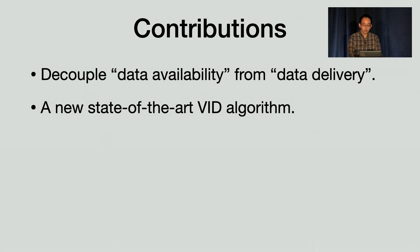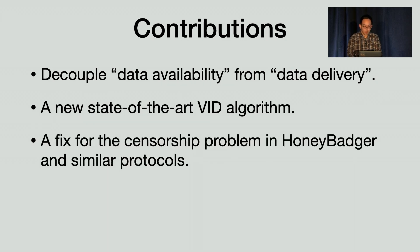Second, we have a new state-of-the-art VID algorithm that enables our vision. Third, we proposed a fix of the censorship problem in Honey Badger and similarly constructed protocols. This was not discussed in the talk, but we have full detail in the paper. And finally, the Dispersed Ledger protocol and its implementation that achieves 2x better throughput and 74% lower latency than Honey Badger on the AWS testbed. Thanks, and I can take questions.